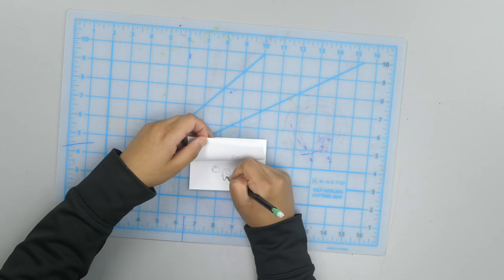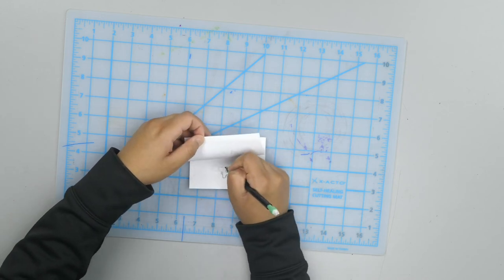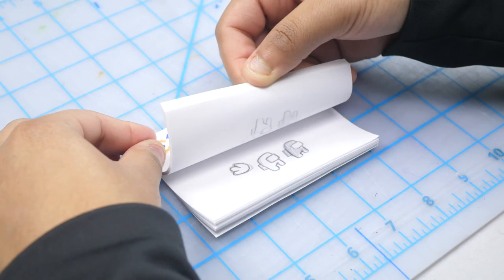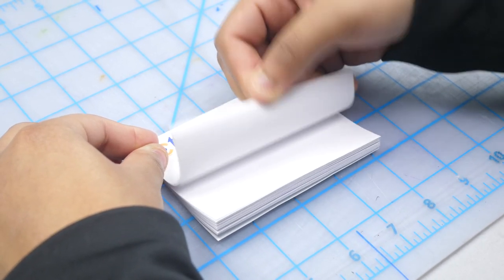On each successive page, draw a slightly new version of the object or character until you finish the book. Now flip through the pages and show your animation. Record a short video on your phone and upload it to the site provided.